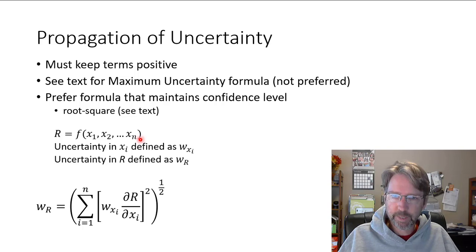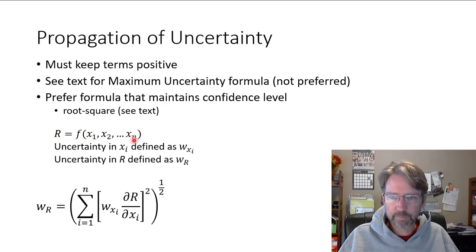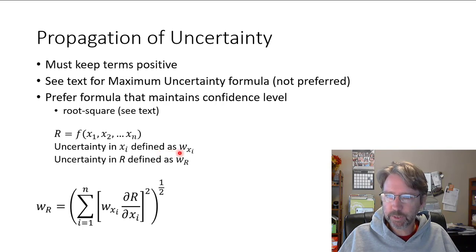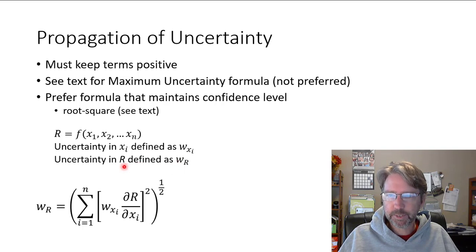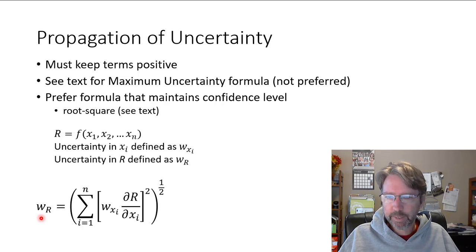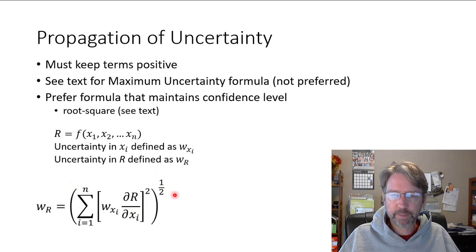We'll use the result that if we have a calculation r as a function of several variables, and we use w as the uncertainty — so w_xi is the uncertainty in the i-th measurement and w_r is the uncertainty in r — then the uncertainty in r is found by taking each measurement's uncertainty times its partial derivative, squaring that quantity, adding them all up, and taking the square root.